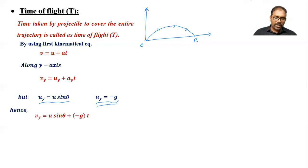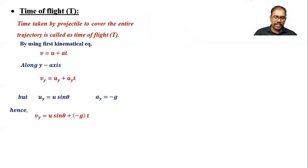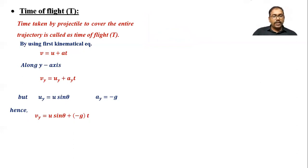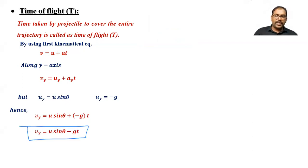Substituting these values, we get vy = u sinθ − g·t. This is our working equation along the y-direction.